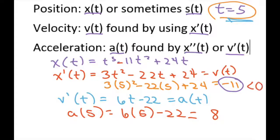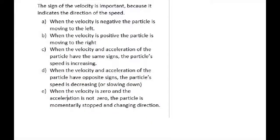So this is negative, and this is positive. And what you need to know is the sign of the velocity is important because it indicates the direction of speed. So what we had is our velocity is negative. So that means the particle is moving to the left.